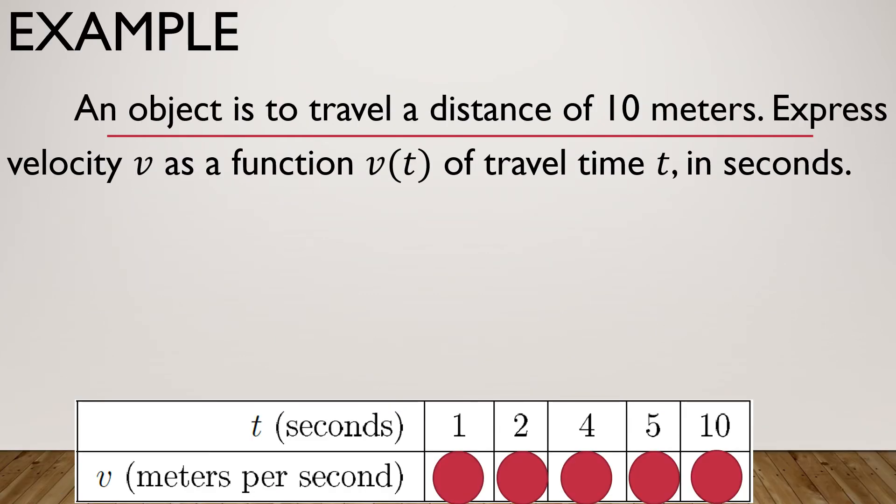Now to give you an example or additional example, an object is to travel a distance of 10 meters. We have to express velocity v as a function v(t) of travel time t in seconds. Based on our lesson in science or physics, if I'm not mistaken, v(t), or velocity as the function of time, is equal to distance over time. So we all know that the distance here is 10 meters. If it is 10 meters, we can replace d by 10.